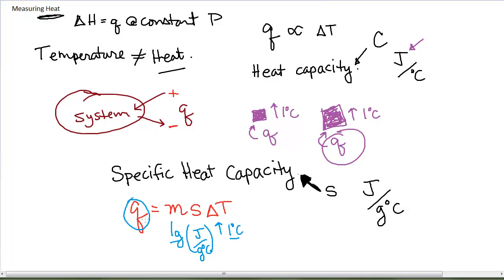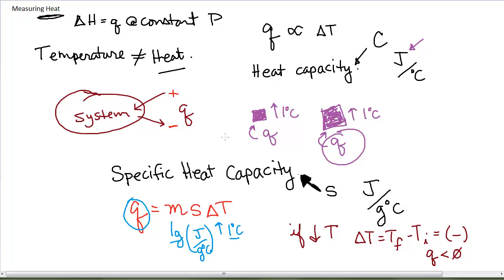The specific heat capacity also relates to the amount of heat released when the temperature goes down. If the temperature goes down, then the delta T term — which is final minus initial — will be negative, which means the Q value will also be negative, meaning heat has been released from the system. If heat flows into the system, Q is positive and temperature goes up. If heat flows out, Q is negative and temperature goes down.